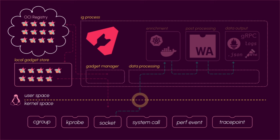Here's a diagram of basically how Inspector Gadget works. At the top left you'll see the OCI registry — that's the part that is generally not on the local machine, it might be something like GitHub Packages. Then you have the local gadget store, where gadgets are stored when they're pulled down.